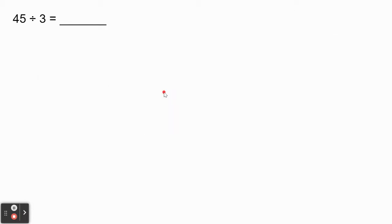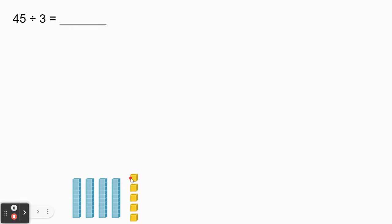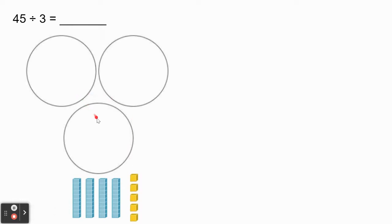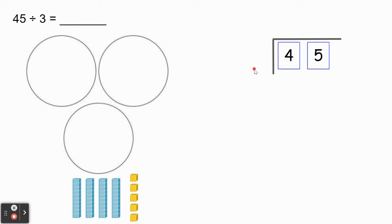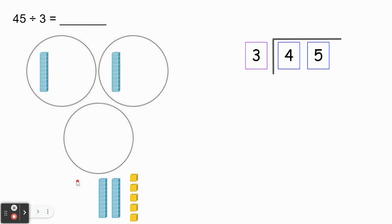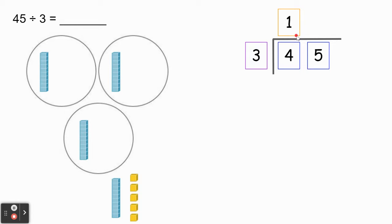Now let's try 45 divided by 3. First, let's represent 45 with the base 10 blocks. We have four tens and five unit cubes or five ones. We're dividing by 3, so we have three groups. Let's represent this in the standard algorithm: the dividend 45 goes on the inside, and the divisor 3 goes on the outside. Let's go ahead and share these rods evenly between each group. We were able to give each group one rod. There's one rod left over, but that's not enough to share evenly between three groups, so we're done sharing for right now. Each group has one rod, so we're going to represent 1 up here in our quotient.